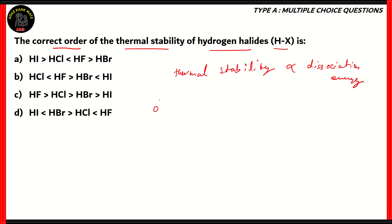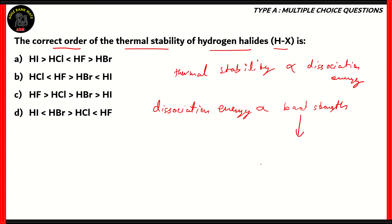This dissociation energy is directly proportional to bond strength. If you have a higher amount of dissociation energy for a molecule, it means the bond is stronger. So higher bond strength results in greater thermal stability. The bond strength depends on the halide itself and its electronegativity.